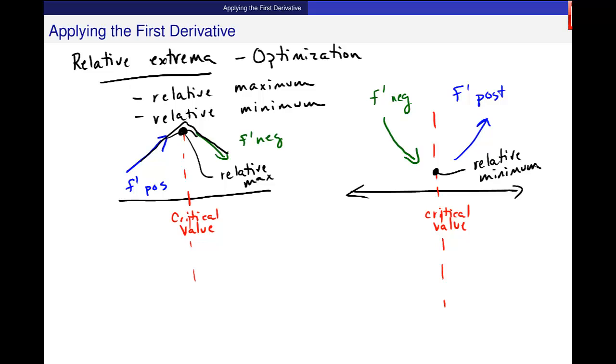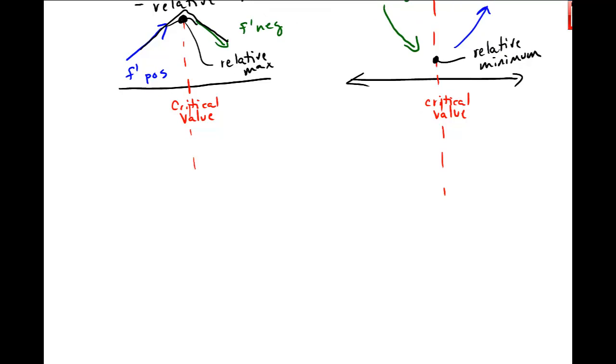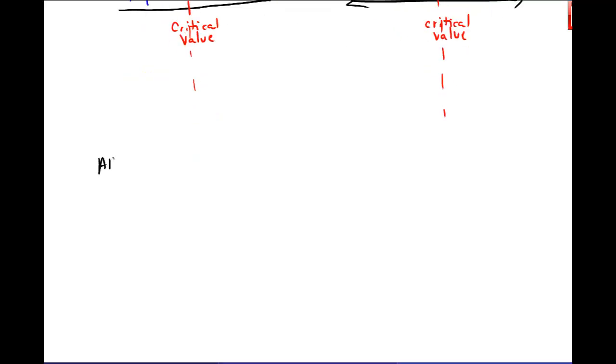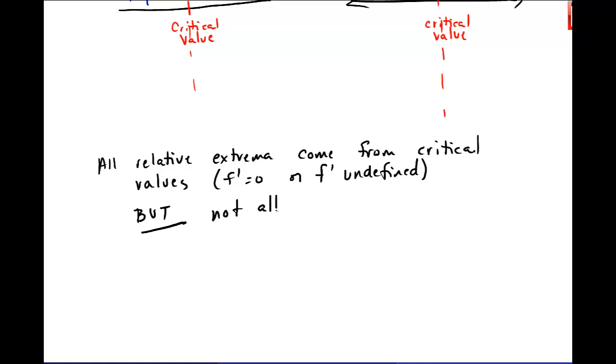So I do want to make sure these relative extrema. All of these relative extrema, relative maximums, come from critical values. The places where f prime is either equal to zero or f prime is undefined. But not all critical values have to be maxes or mins. They don't.